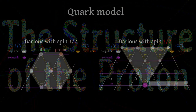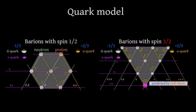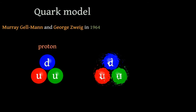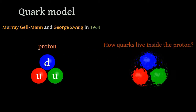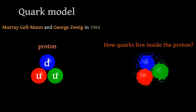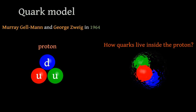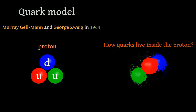The quark model works very well and it perfectly describes experimental data and even predicts new subatomic particles, but this model was static. That is, it did not include any information about how elementary particles move inside the proton and how they interact with each other.